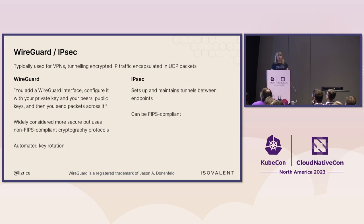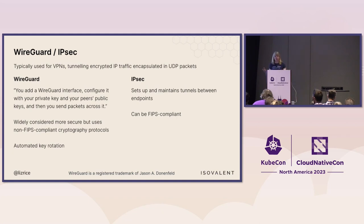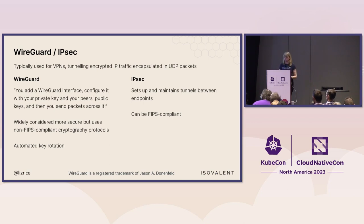WireGuard and IPsec were both originally designed for use in VPNs. They're quite similar — they tunnel your IP traffic encapsulated and encrypted in the form of UDP packets. IPsec maintains tunnels over a longer lifetime between each pair of peers, and allows you to specify the cryptographic ciphers you're going to use. You can choose ciphers that are FIPS compliant, so you can run IPsec and be FIPS compliant.